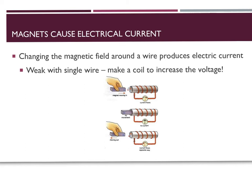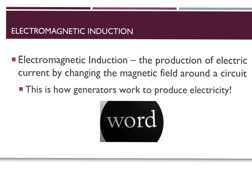By changing the magnetic field around a wire we can produce electric current. Moving a magnet into a coil of wire causes voltage; moving the magnet out also causes voltage; but if the magnet isn't moving it won't cause any current or voltage difference. The magnet has to be constantly moving to keep a continuous electrical current flowing. With a single wire this effect is weak, but coiling up the wire increases the effect of the moving magnet.